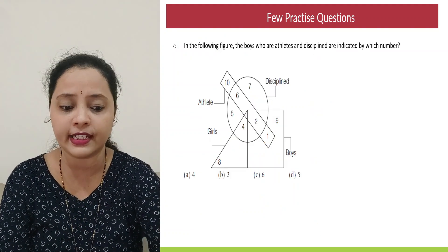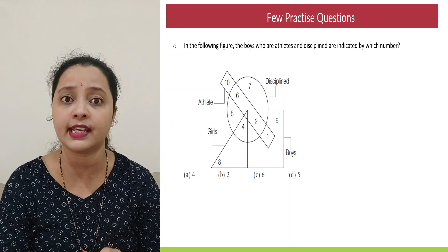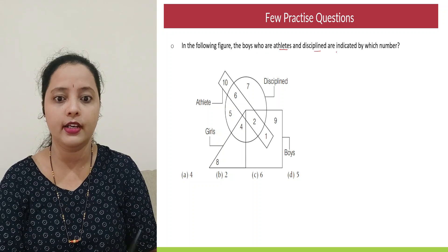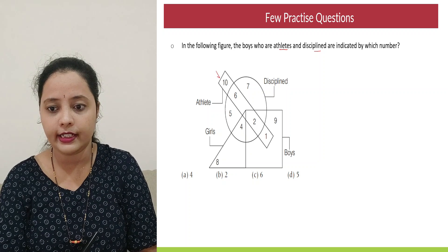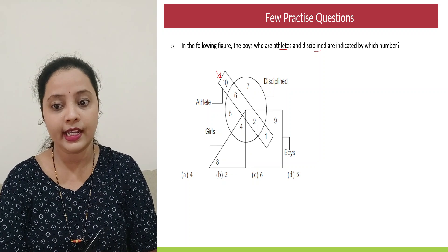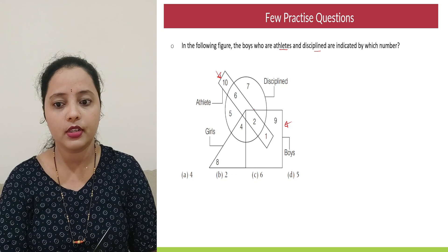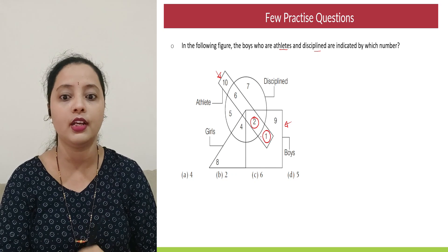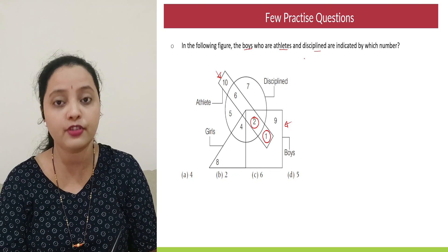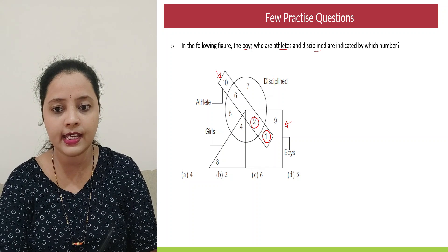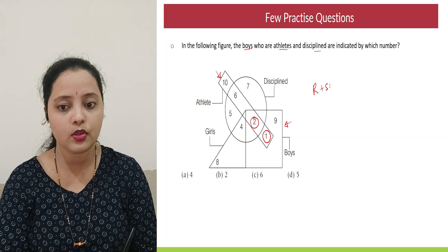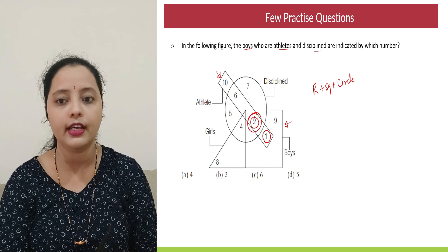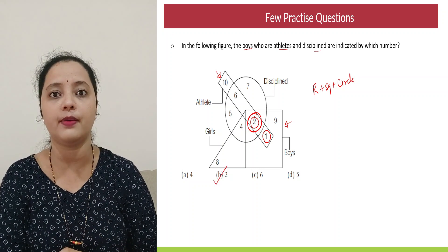So this was our first step. Now let's move to the second time. Again I would suggest pause the video for a second and check if you are getting the answer right. So they say find the boys who are athletes disciplined are indicated by which number? So which are athletes? This rectangle represents athletes. Now athletes who are boys. So this square is boys. So combination of or common of rectangle and square. That is this number 2 and this number 1. But I want those boys who are athletes to be disciplined as well. So disciplined is lying inside the circle. So combination of rectangle, square and circle. So combination of all three. So which is the number that falls in that? It's the number 2. So your answer would be option B.